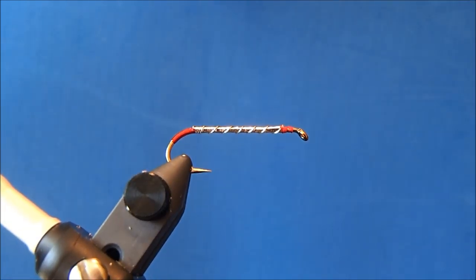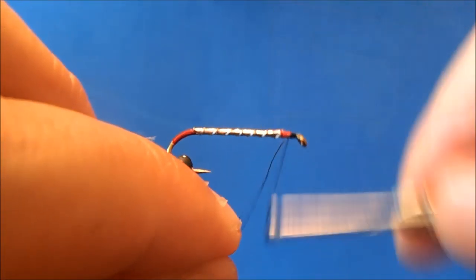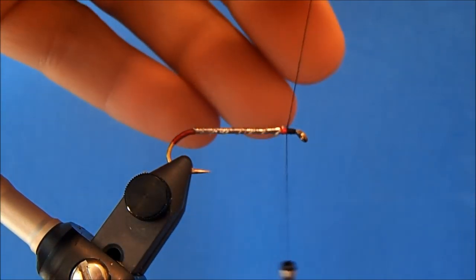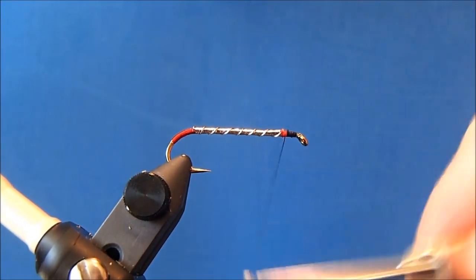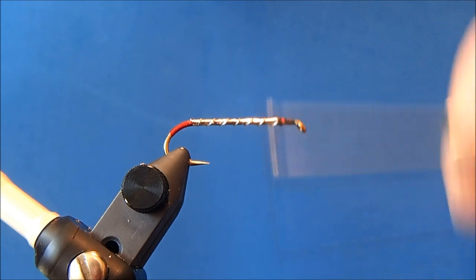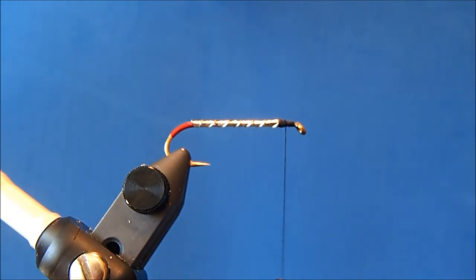All right now I can start to tie in my next thread color and so again this is a black 6-0 and I'll just get it started here at the front of the hook, remove the excess and I'm just going to cover up the red and I'll leave it kind of in the middle of that section.